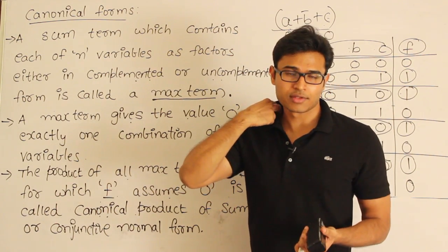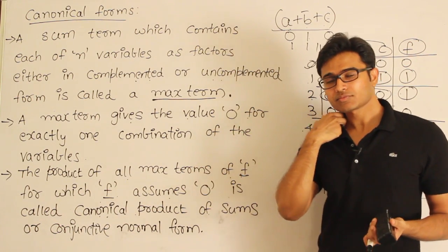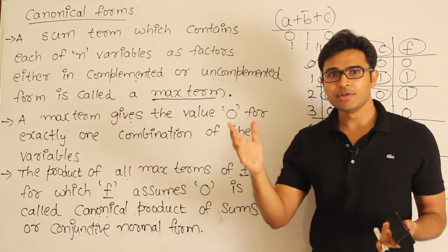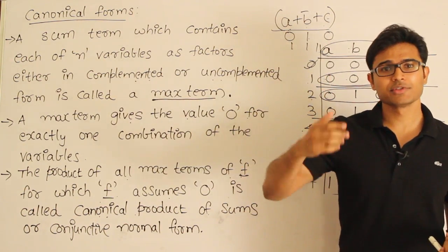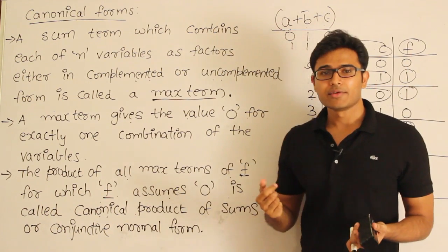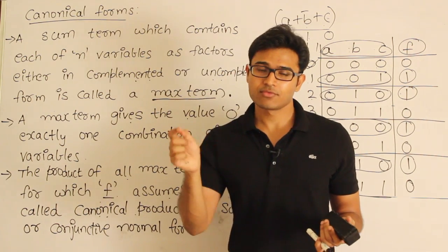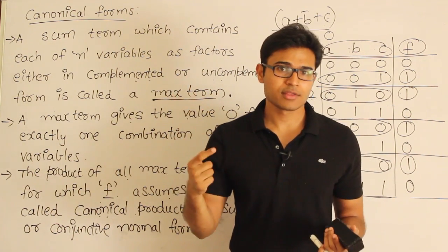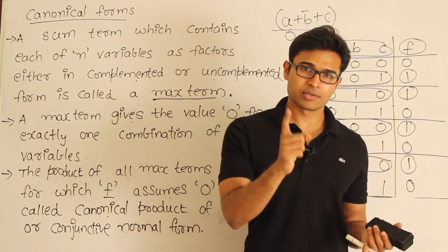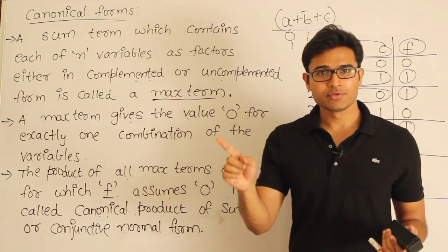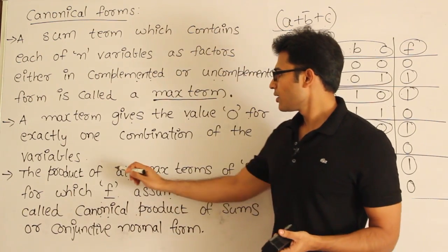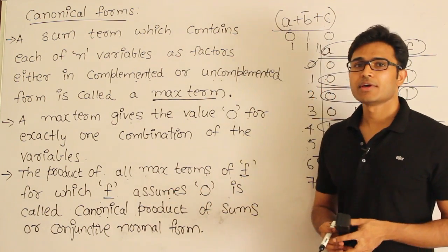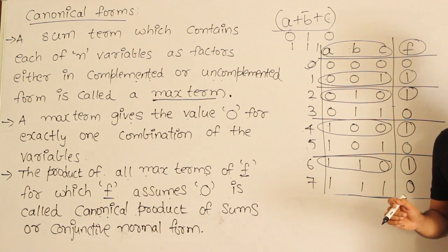In min terms — in canonical sum of products — you say what are the values of the inputs for which the function is going to be 1. That is enough; you need not talk about all other combinations, because all other combinations are obviously going to be zeros. Similarly here, we say what are all the combinations of values for which the function is going to be 0. That is enough, because all others are going to be 1. Either you define the function in terms of where the value is 1, or where the value is 0. Both are the same — one uses min terms and the other uses max terms.